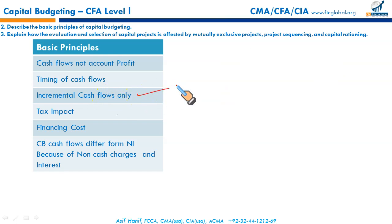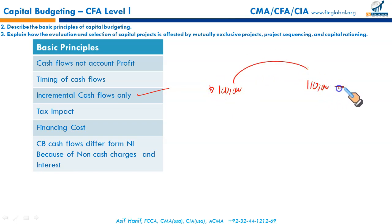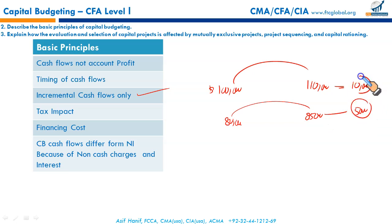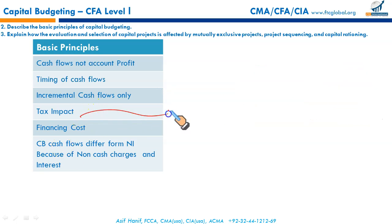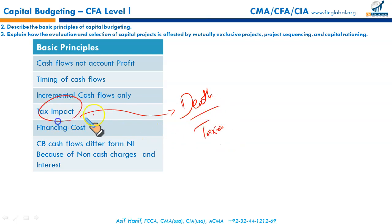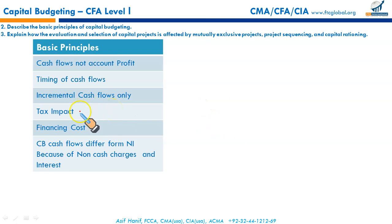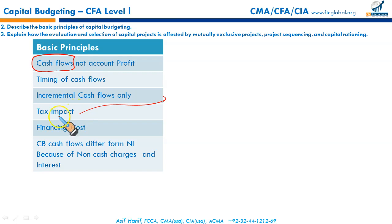We will only consider the incremental cash flows. If our revenue is $100,000 and a project raises it to $110,000, we only consider the incremental $10,000. Similarly, if existing cost is $80,000 and after the project it rises to $85,000, only the incremental cost and revenue are relevant. Regarding taxes — you can't avoid death and taxes — so wherever there is a tax impact, it must be considered. Cash flows must be taken after tax, including any gain or disposal on replacement of assets.